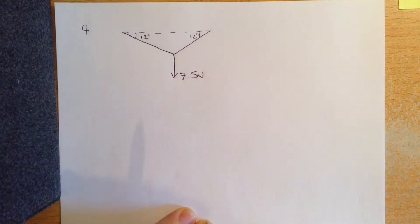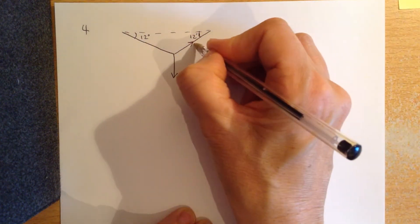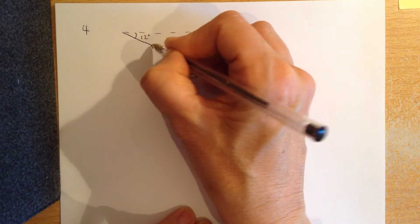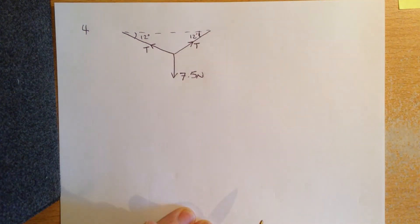So the weight is 7.5 newtons hanging down, and in each side, because it is symmetrical, there is an equal tension on both sides. The question asks: calculate the tension in each half of the wire.